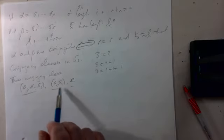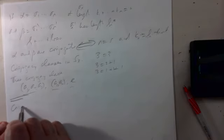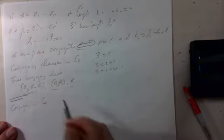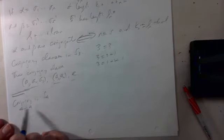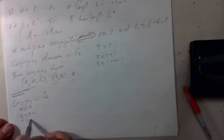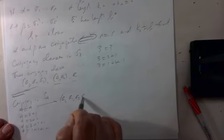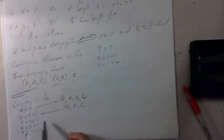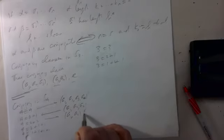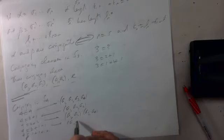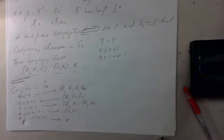The conjugacy classes in S₄ correspond to partitions of 4: four (a 4-cycle), three plus one (a 3-cycle), two plus two (two transpositions), two plus one plus one (a single transposition), and one plus one plus one plus one (the identity). So there are five different conjugacy classes in S₄.